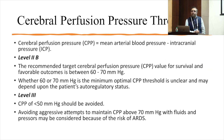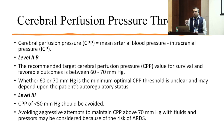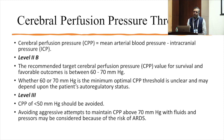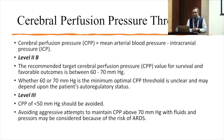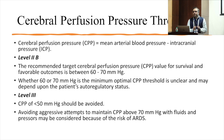CPP is mean arterial pressure minus ICP or central venous pressure, whichever is higher. In TBI, we presume ICP is high. The best target for survival and favorable outcome is a CPP between 60 to 70 mmHg. Less than 50 is very harmful — avoid it, because the autoregulatory capacity of the brain is lost below 50. Between 50 and 150 is the autoregulatory range. Extremely high CPP above 70 is also not good because achieving it requires fluids and vasopressors, risking ARDS. Whether to target 60 or closer to 70 depends on autoregulation — if preserved, go towards the lower end; if hampered, target the upper end.